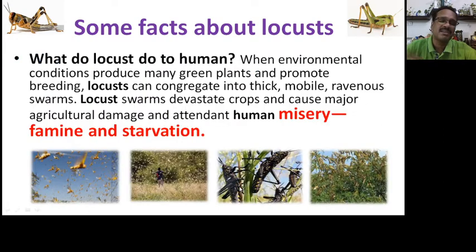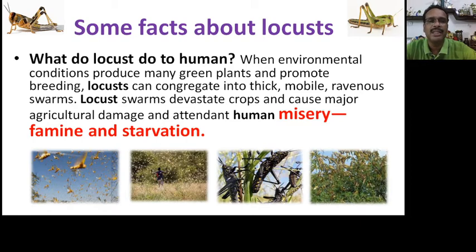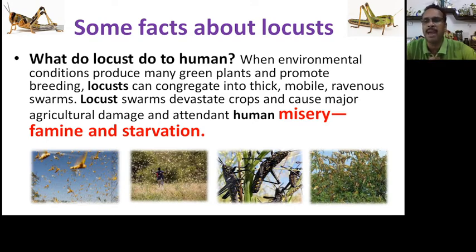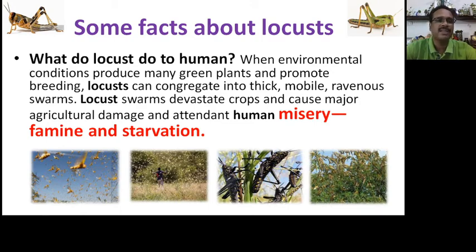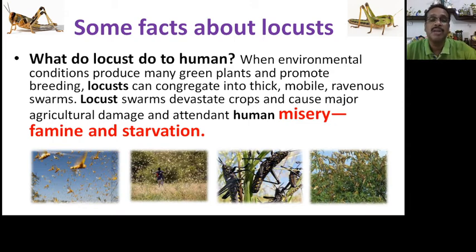What do locusts do to humans? When environmental conditions produce many green plants and promote breeding, locusts congregate into thick, mobile, ravenous swarms. These swarms devastate crops — they eat anything green and make fields barren — causing large-scale damage to agriculture and ultimately leading to starvation and famine. They are definitely not helpful to humans, even if eaten as delicacies in many countries.